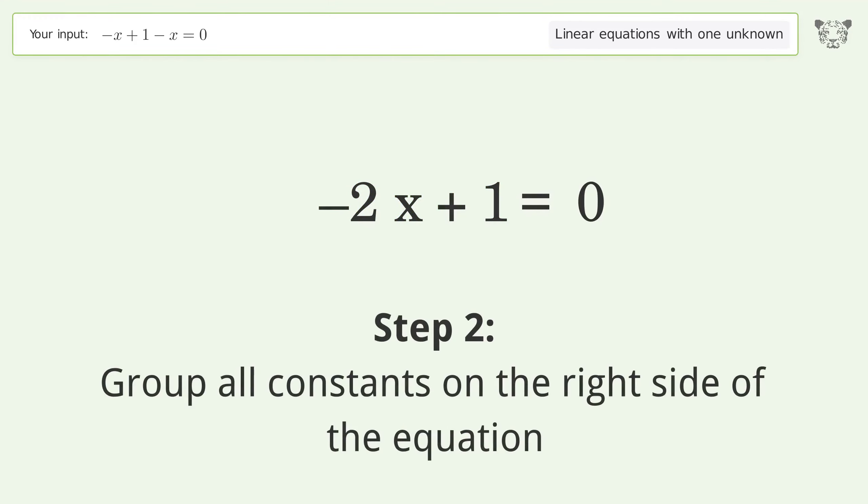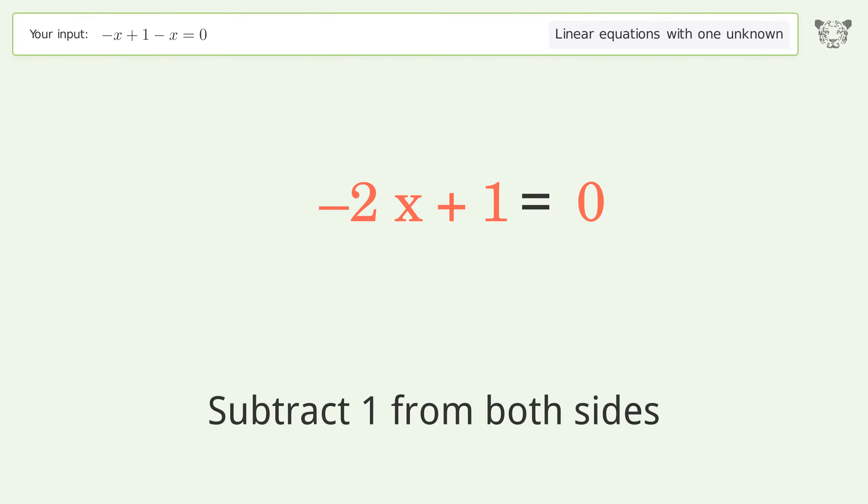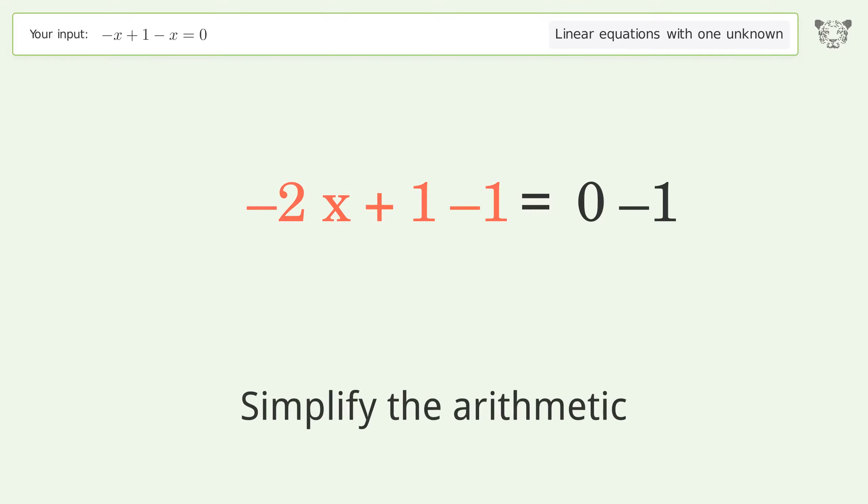Step 2: Group all constants on the right side of the equation. Subtract 1 from both sides. Simplify the arithmetic.